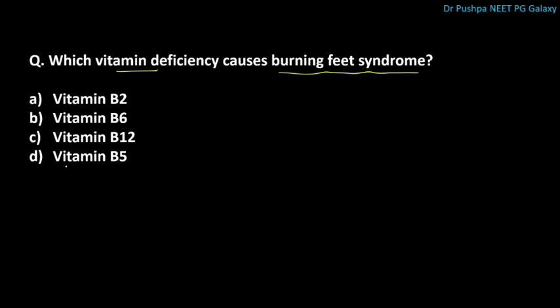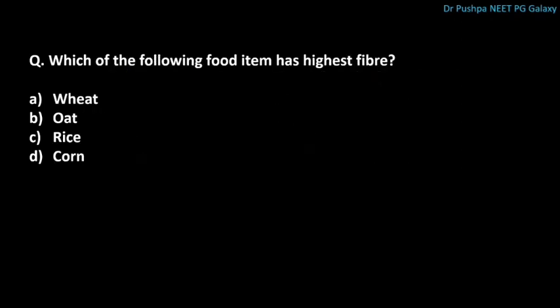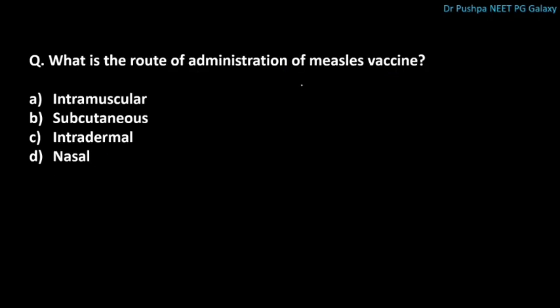Which of the following is a semi-essential amino acid? The other semi-essential amino acid is arginine. Which has the richest source of vitamin D? The correct answer is halibut liver oil. Which vitamin deficiency causes burning feet syndrome? The correct answer is vitamin B5, that is pantothenic acid. Which food item has the highest fiber content? The correct answer is corn.